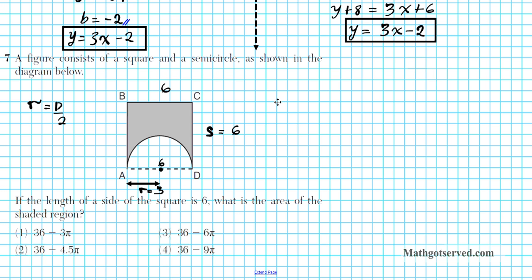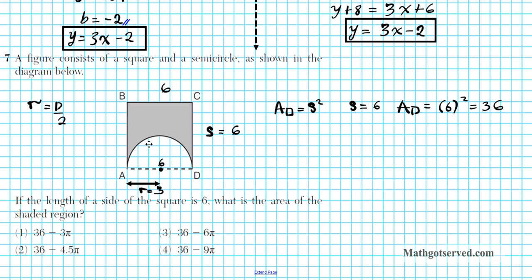The area of a square is simply side squared — length times width are the same, so just s squared. For this problem, s equals 6, so the area of the square is 6 squared, which is 36. That's the area of the entire square. To get the area of the shaded region, we must subtract the area of the semicircle.